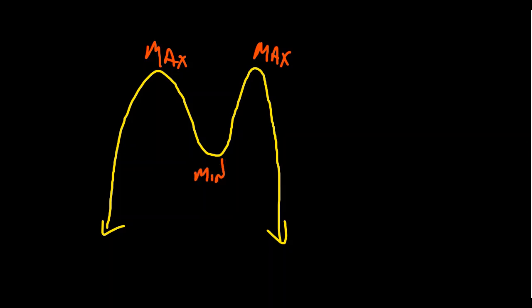In terms of absolute minimum, there is none. So there's no absolute minimum just like we saw before. What about the absolute maximum? It turns out that these two values right here are the exact same y-coordinate.